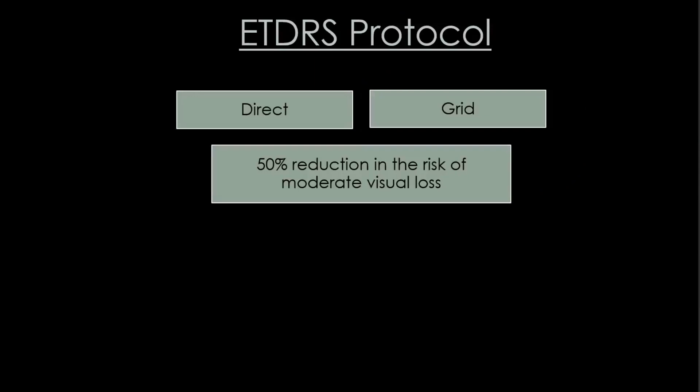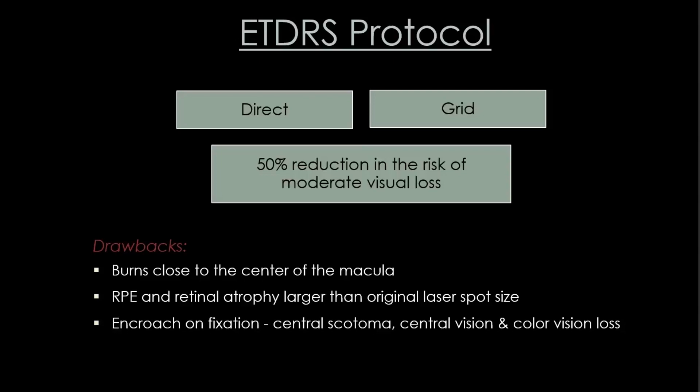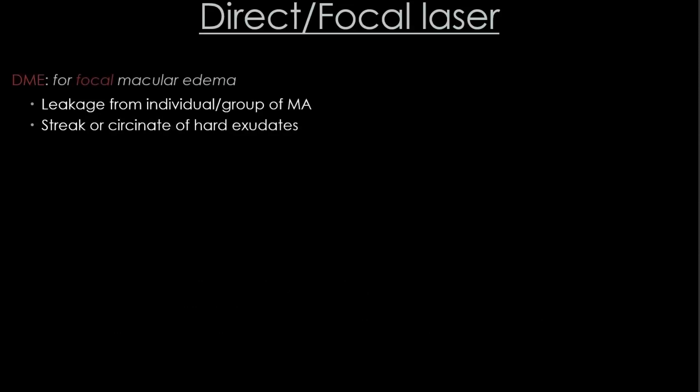Moving on to macular lasers: as per the ETDRS protocol, both direct (focal) laser and grid laser result in a 50% reduction in the risk of moderate visual loss in diabetics. Their disadvantage is proximity to the fovea — any expansion of laser scars can encroach on fixation and cause central vision loss. The main indication for focal laser is focal macular edema in diabetics where the leak is from a single or group of microaneurysms, and also focal leaks away from the fovea in central serous chorioretinopathy.